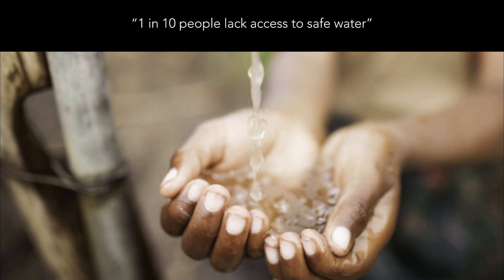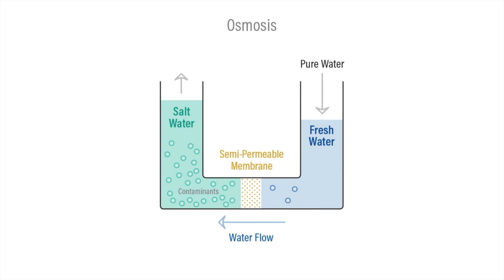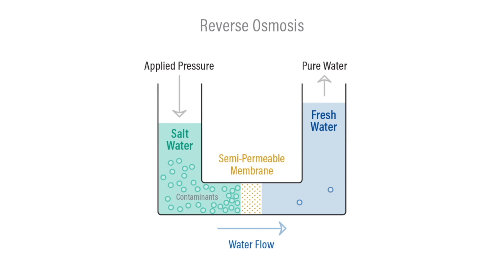Currently, filtration is based on the ideas of osmosis and reverse osmosis. In the normal osmosis process, the solvent naturally moves from an area of lower solute concentration through a filtration membrane to a higher solute concentration area. In nature, fresh water, which is the solvent, will dissolve into a more salty region. In order to achieve water desalination, an external pressure must be applied to reverse the natural flow of solvent. This process is called reverse osmosis.